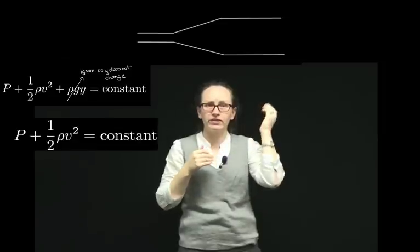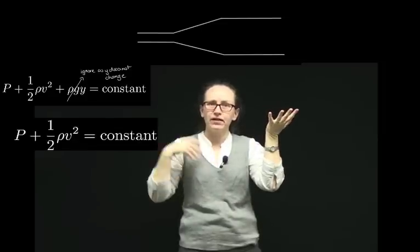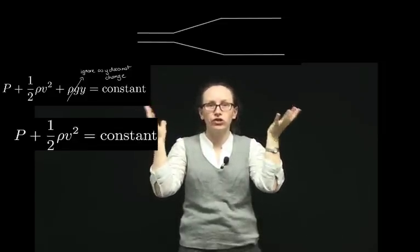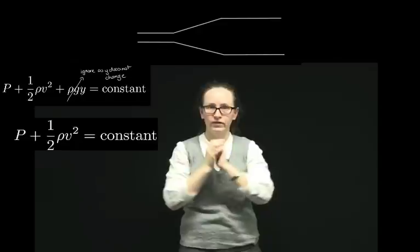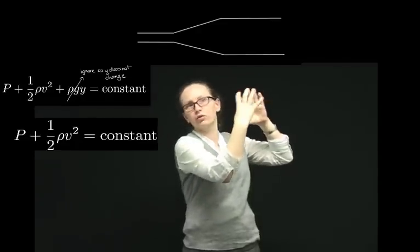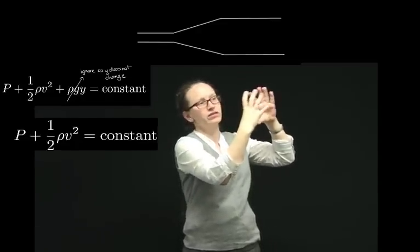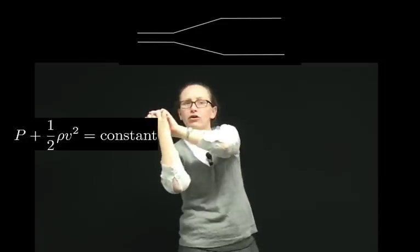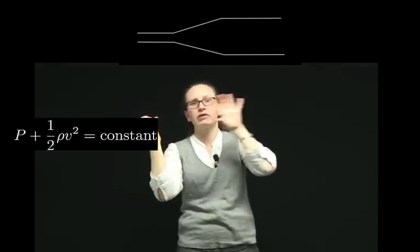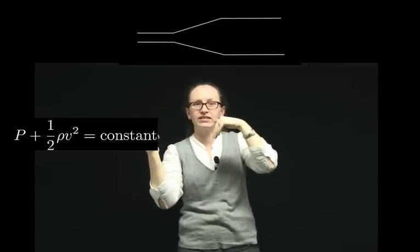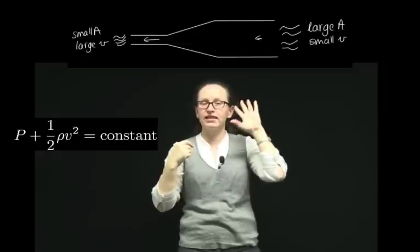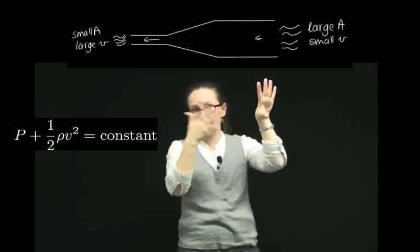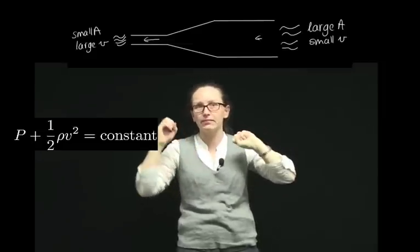So we've got that the pressure plus a half the density times the velocity squared is constant. We start off in the wide pipe. As we go from the wide pipe to the narrow pipe, the cross-sectional area A decreases. Now we've just seen that A₁ times V₁ equals A₂ times V₂.